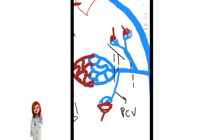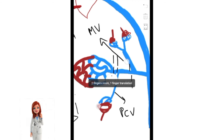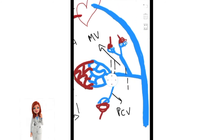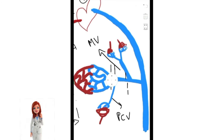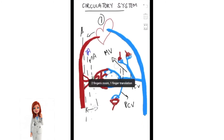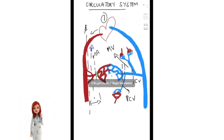Two post-capillary venules join to form the muscular venules. Two muscular venules combine to form the collecting venules. The collecting venules finally drain back into the veins.